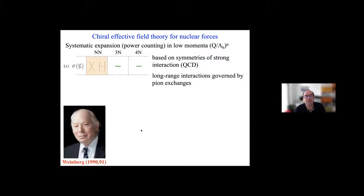Instead, we use effective field theories of the strong interaction to describe the nuclear chart and nuclei. The prime effective field theory was introduced in nuclear physics 30 years ago by Steven Weinberg and is called chiral effective field theory. Here's the implementation used today in its description of nuclear forces — the interactions of nucleons: two nucleons, three nucleons, and four nucleons in free space or inside a nucleus.